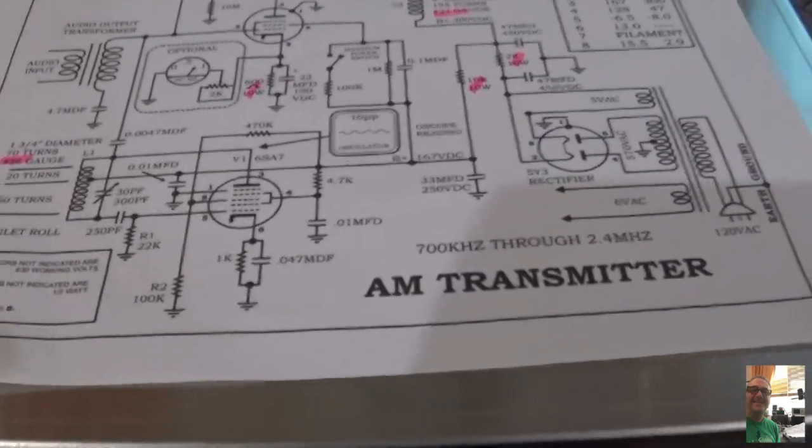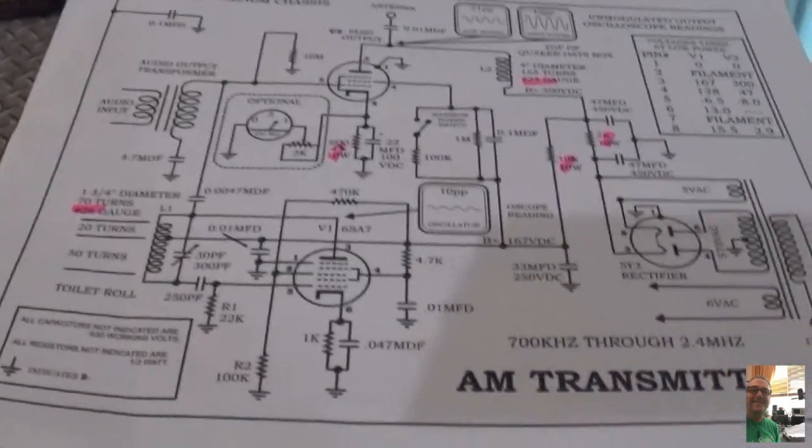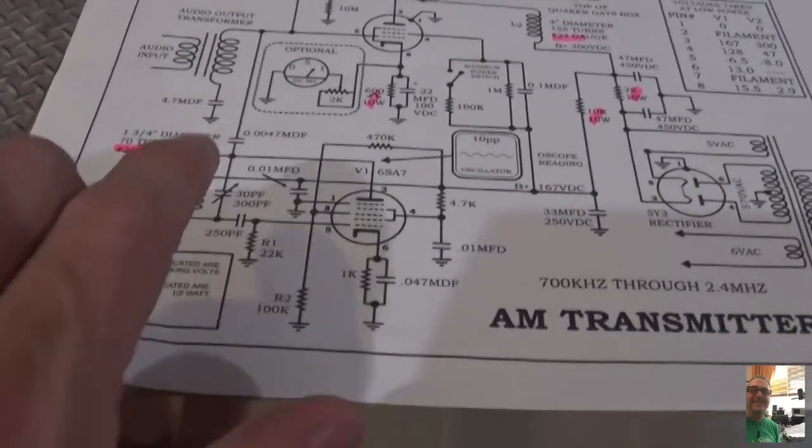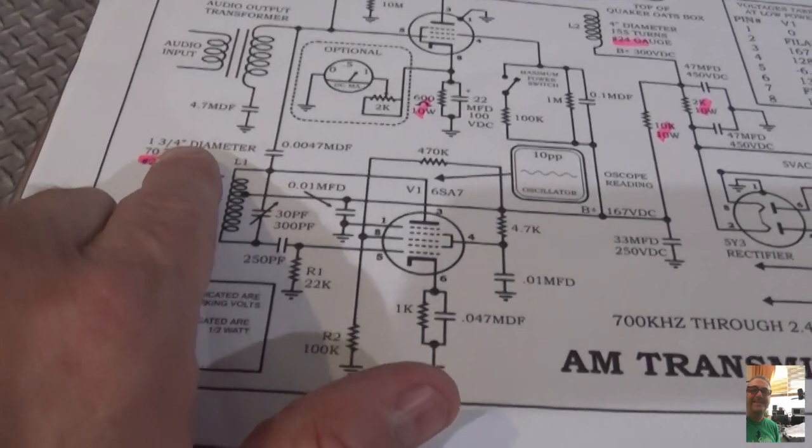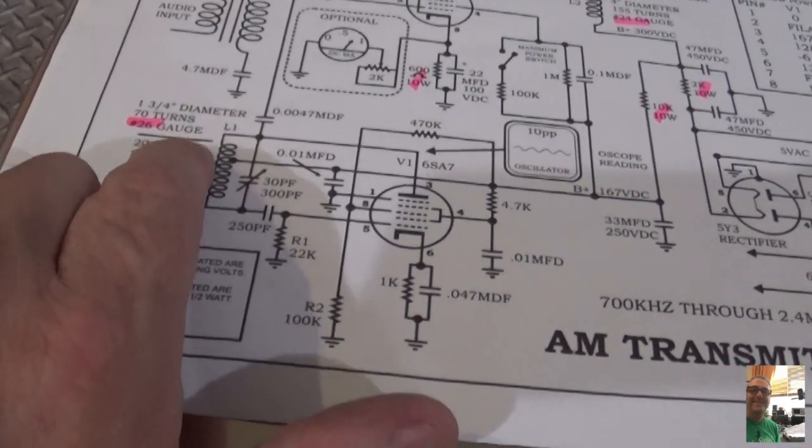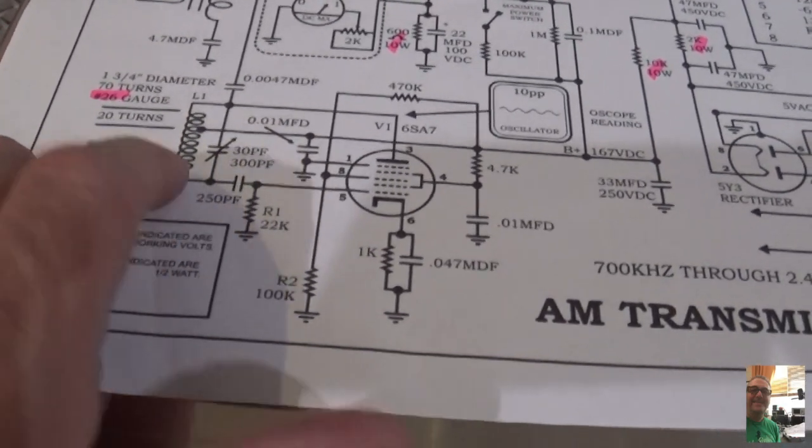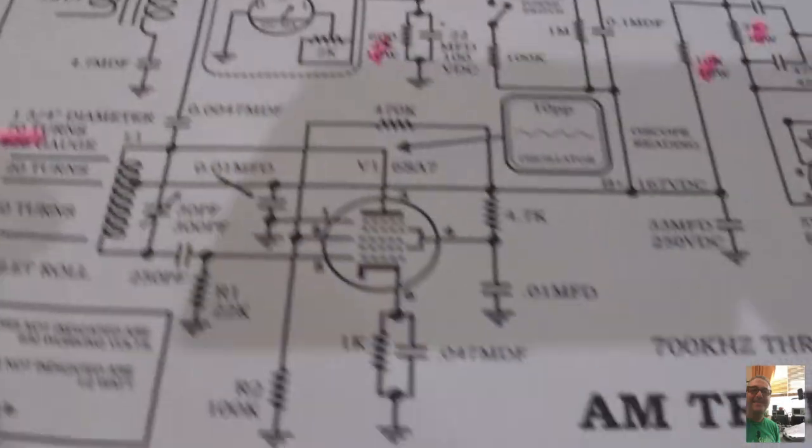If any of you want to build one of these, just look up Rick McWhorter and you'll find it. But here's the schematic. Just a couple of things to point out. Here's an inductor, it's actually a toilet paper roll that you use, and it's got a center tap. So 20 turns on one side, 50 turns on the other, total of 70, using 26 gauge magnet wire.